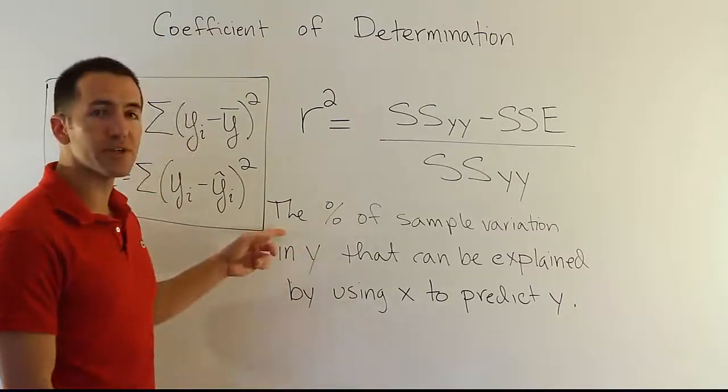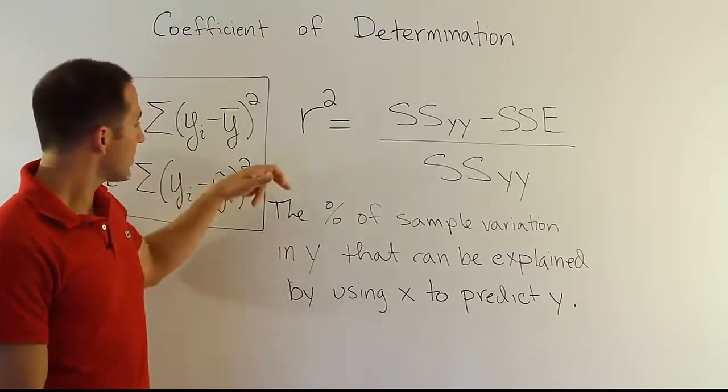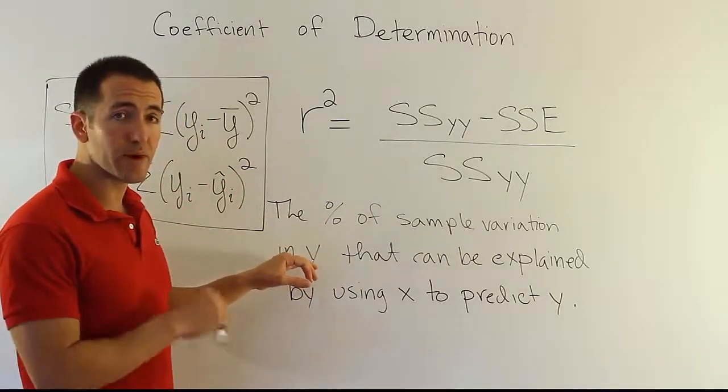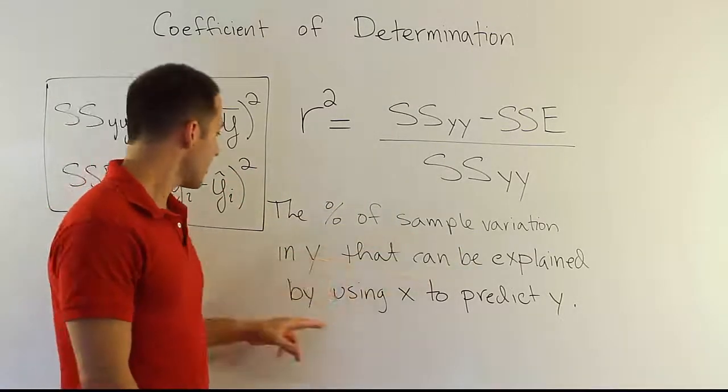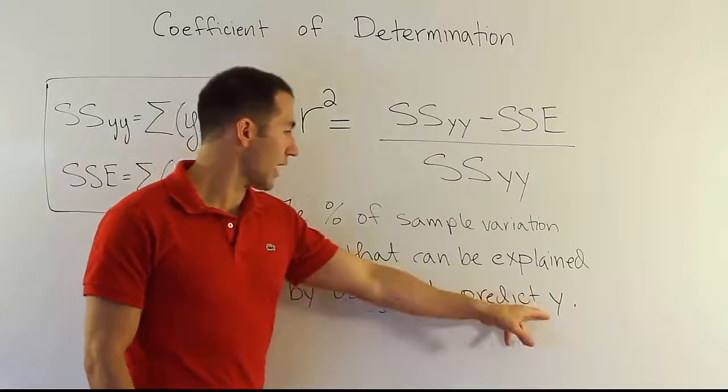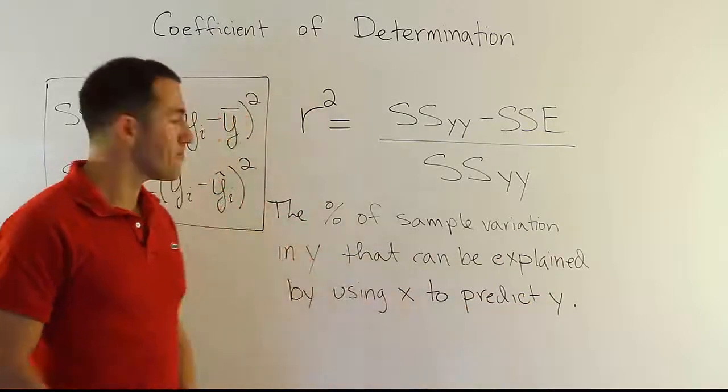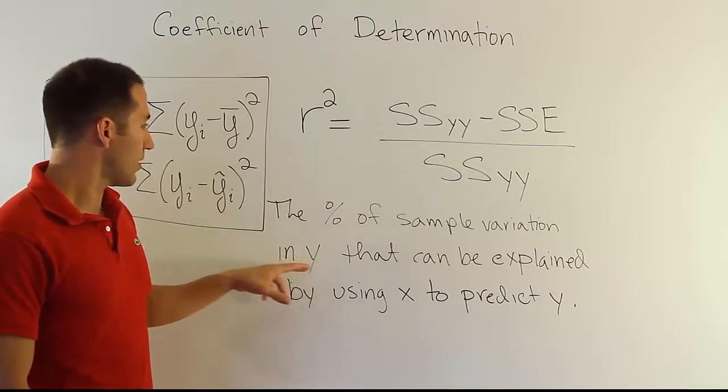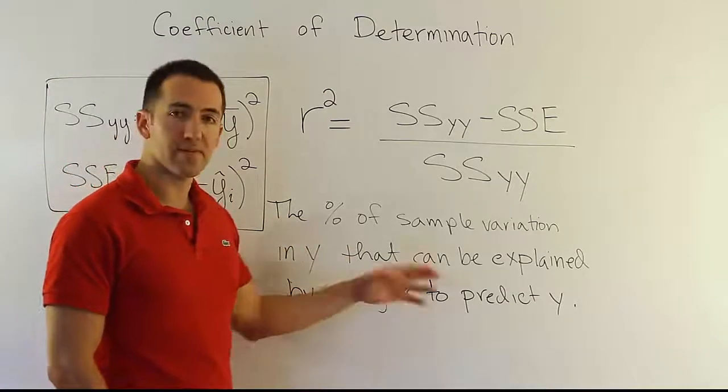Let's start with the definition here which I've written up on the board. It says the percent of sample variation in y, remember y is your response variable, that can be explained by using x to predict y in our linear model. So the percent of sample variation in the response variable that can be explained by x in the model.